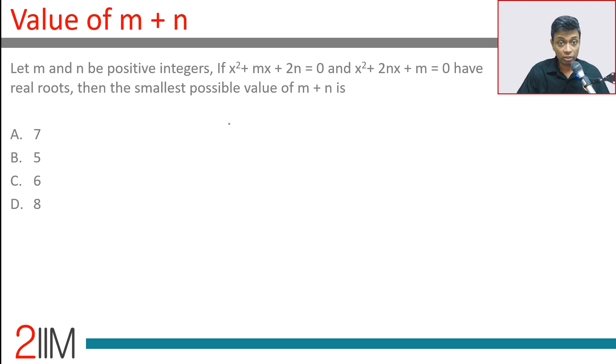Let m and n be positive integers. If x² + mx + 2n = 0 and x² + 2nx + m = 0 both have real roots, find the smallest possible value of m plus n.